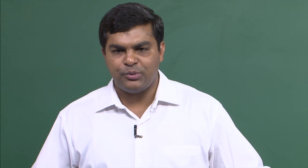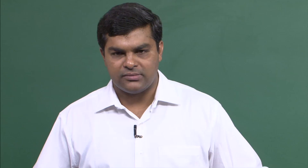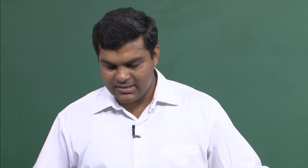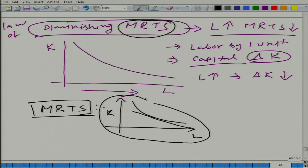We have to remain on the same isoquant. When talking about capital and labor, MRTS is the amount of capital that needs to be decreased to maintain the same output when we increase labor by one unit.